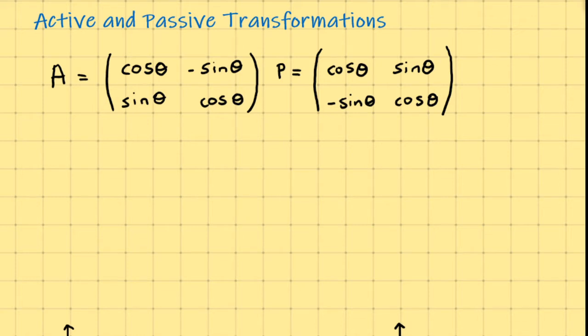So to begin with, here are our two transformation matrices, active and passive. You see they differ slightly in their form, which we would expect, because they are not the same.